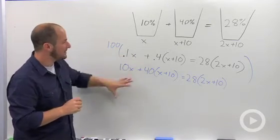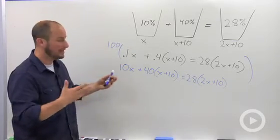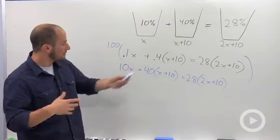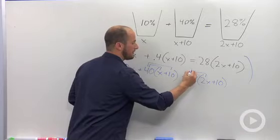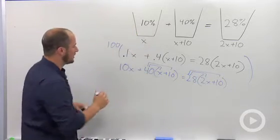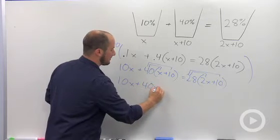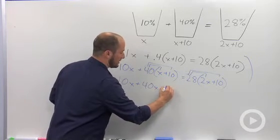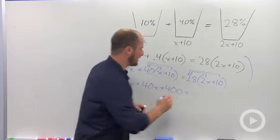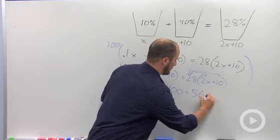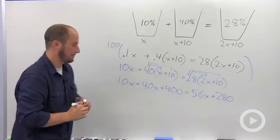Okay. We now have a nice linear equation. No decimals. Solve it out as we would any other linear equation. So distribute our terms through. So distribute that 40 and that 28. 10x stays the same. That gives us 40x. 40 times 10 is 400. 28 times 2 is 56. And 28 times 10 is 280. Okay.